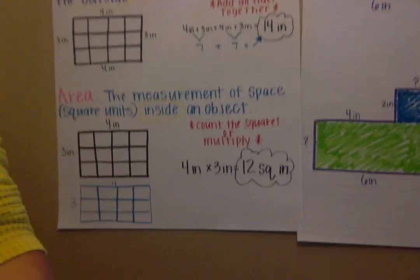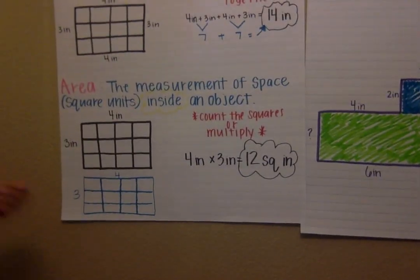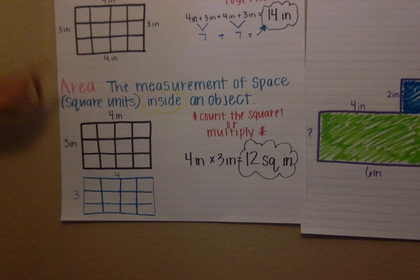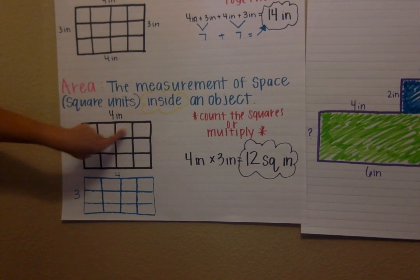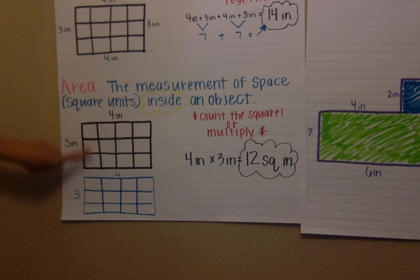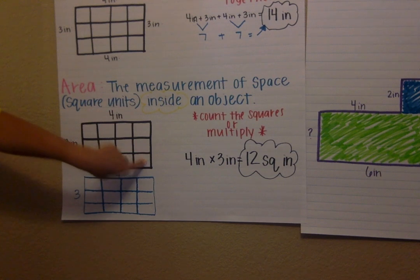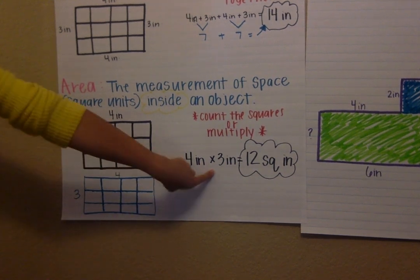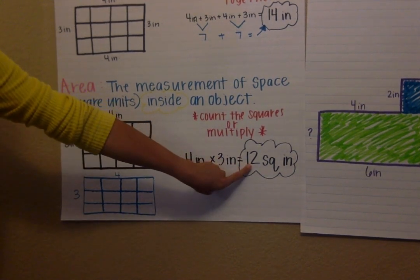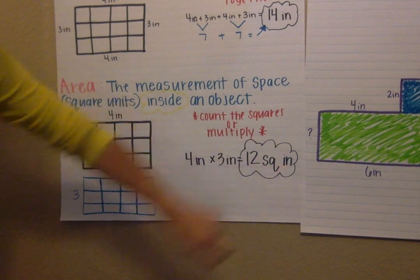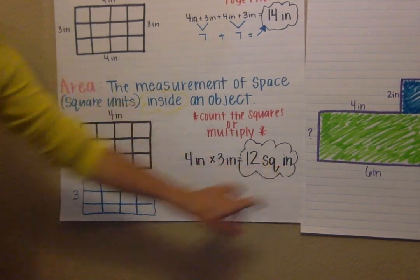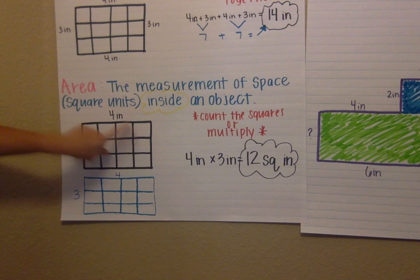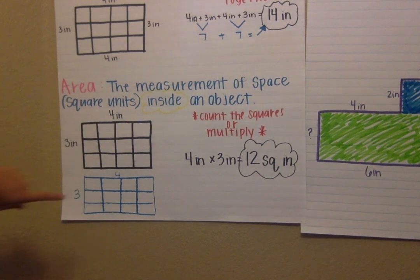So now we are going to move on to this problem down here for area. We can either go one, two, three, four, five, six, seven, eight, nine, ten, eleven, twelve, or you can multiply four times three and that would equal twelve square inches. Again, square inches because you have squares here and then it is already labeled in inches.